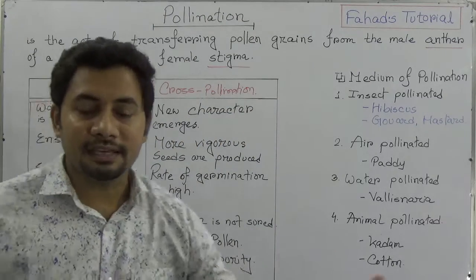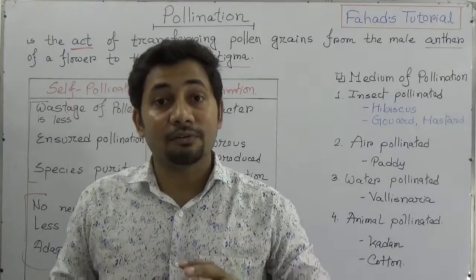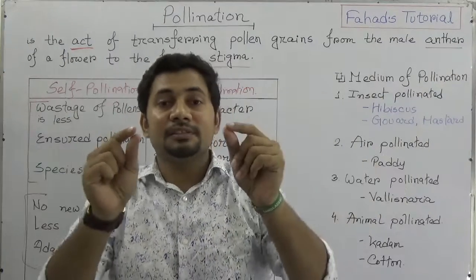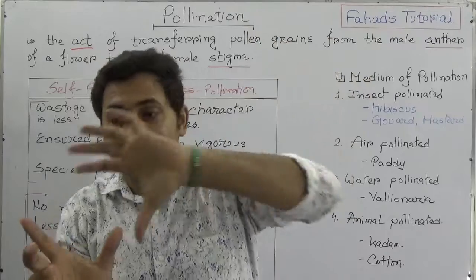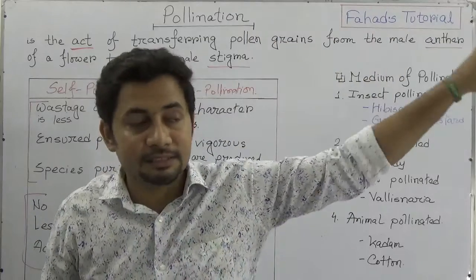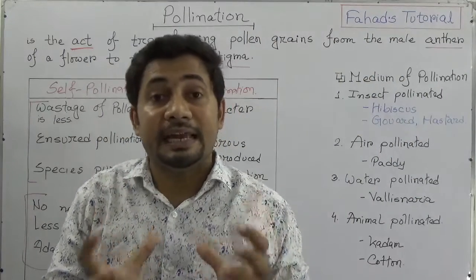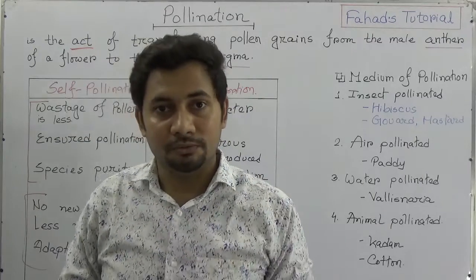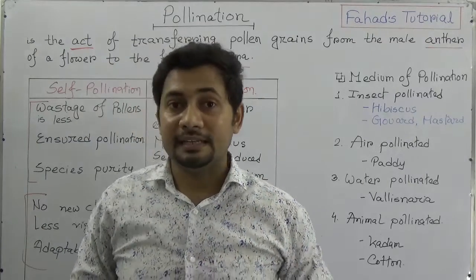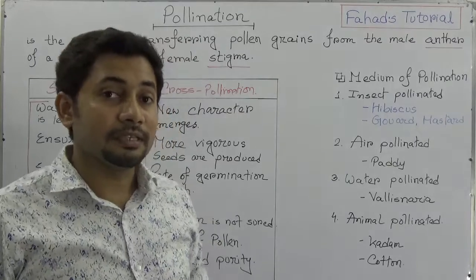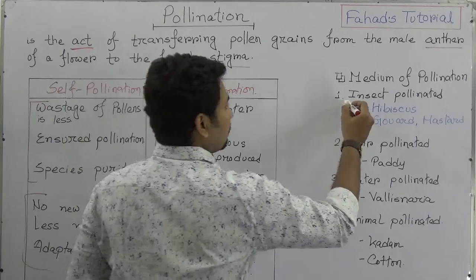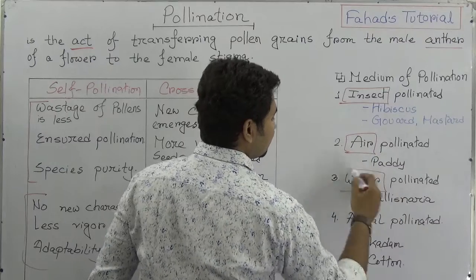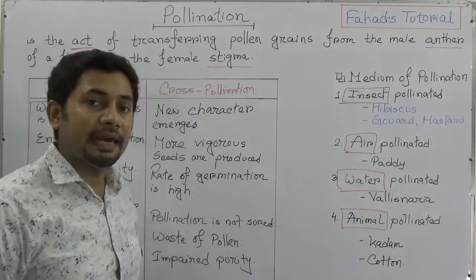In cross-pollination, pollen grains are transferred from one plant to another, so it requires a carrier or medium. There are four such carriers: number one, insect; number two, air; number three, water; number four, animal.